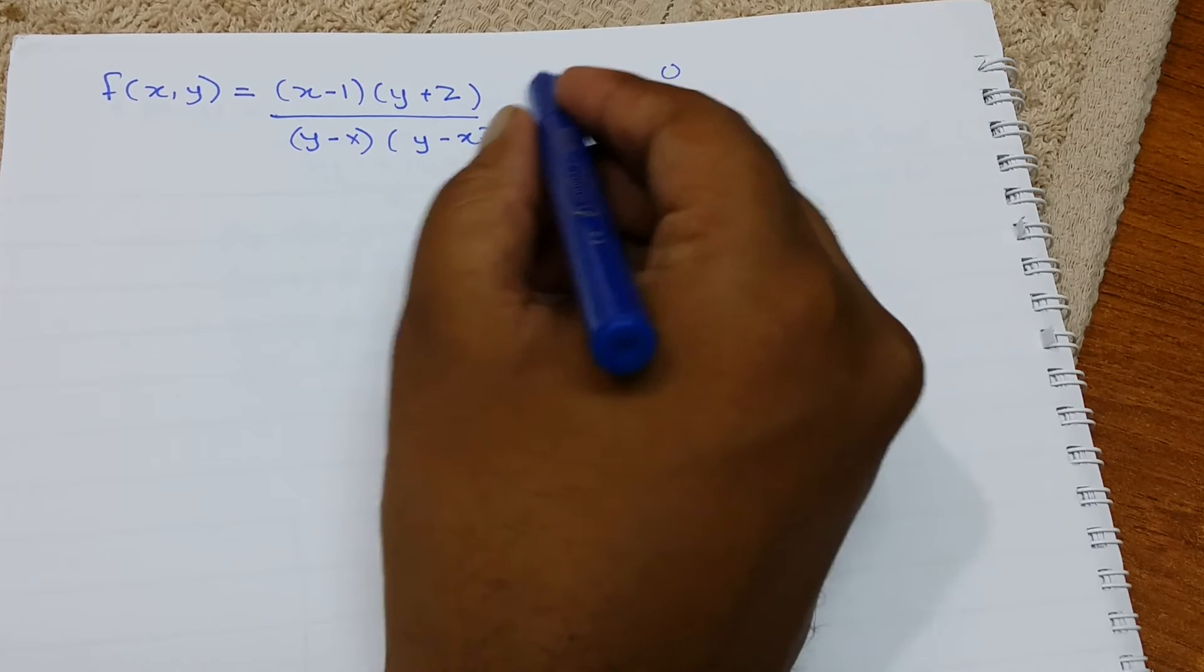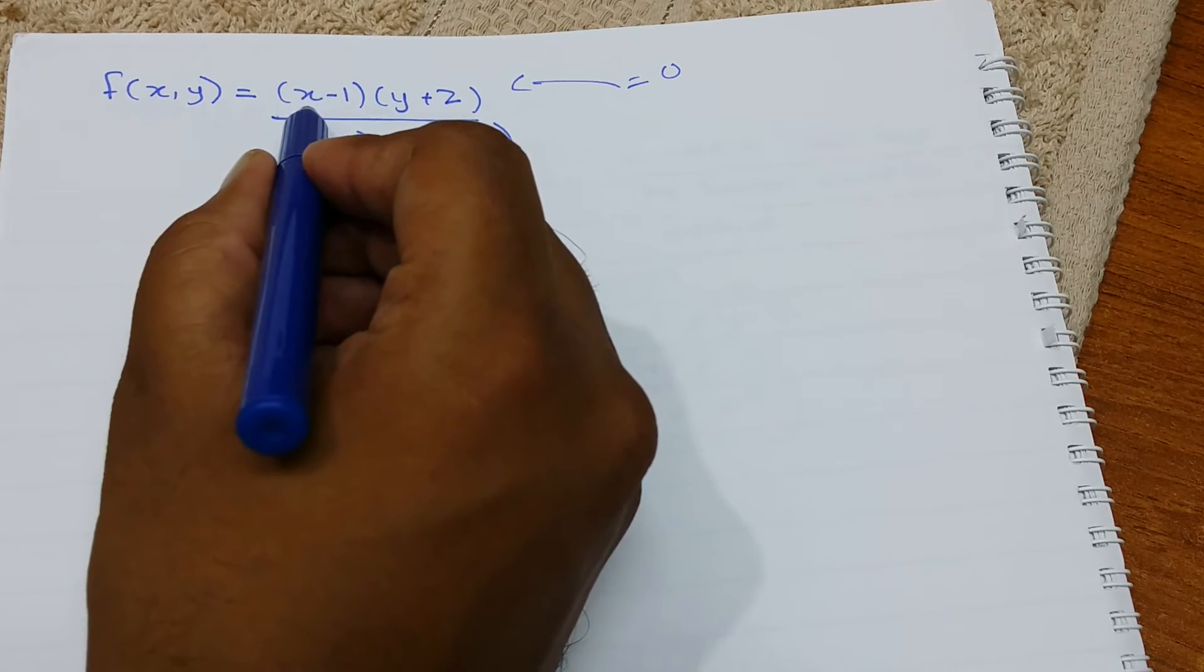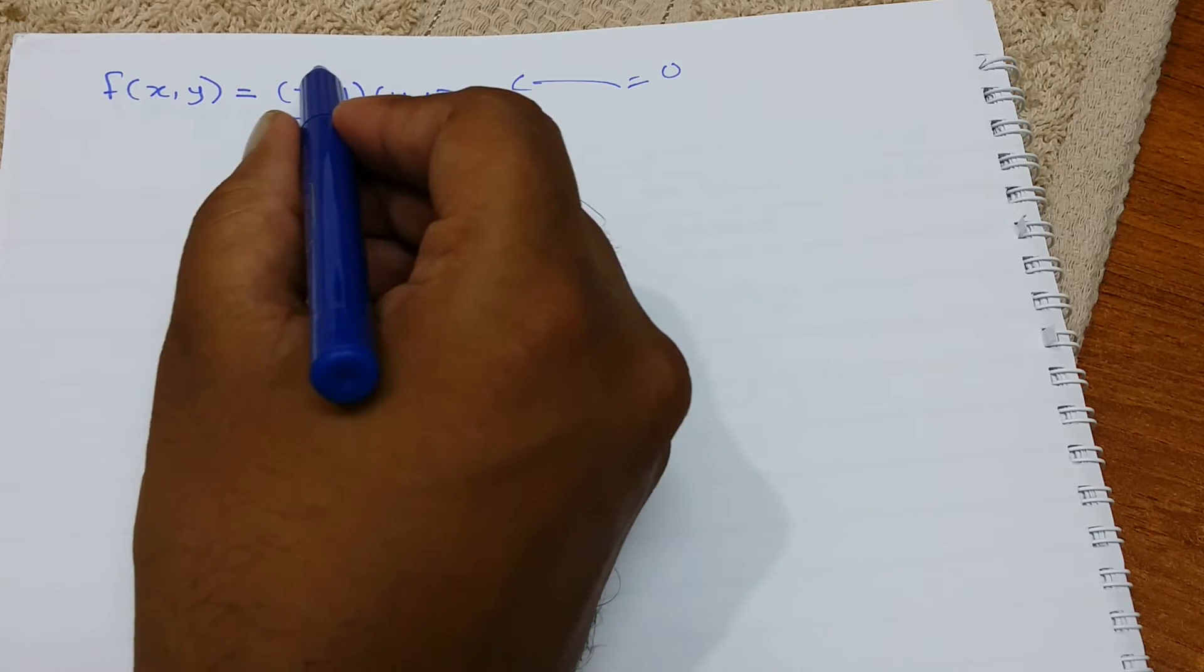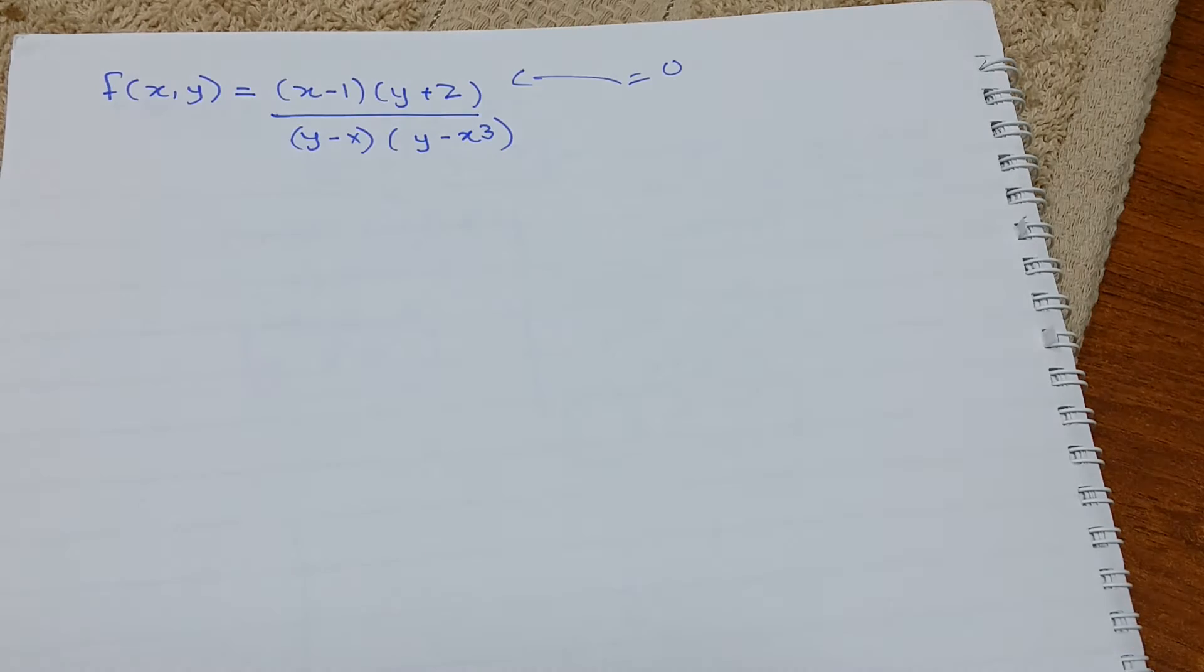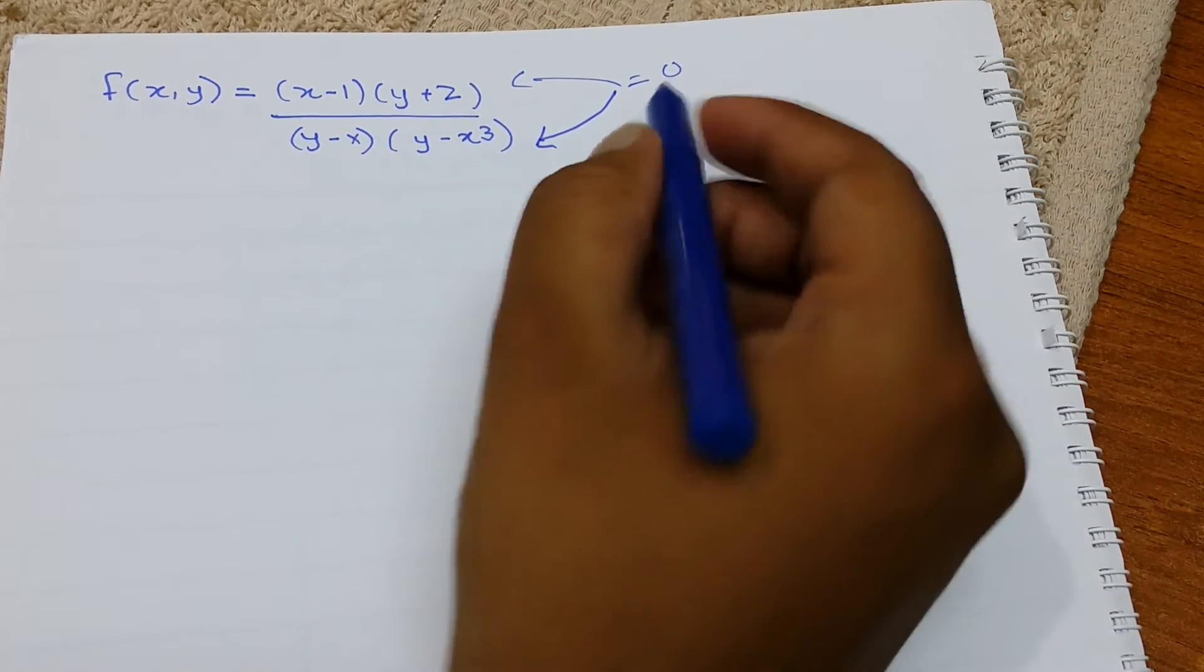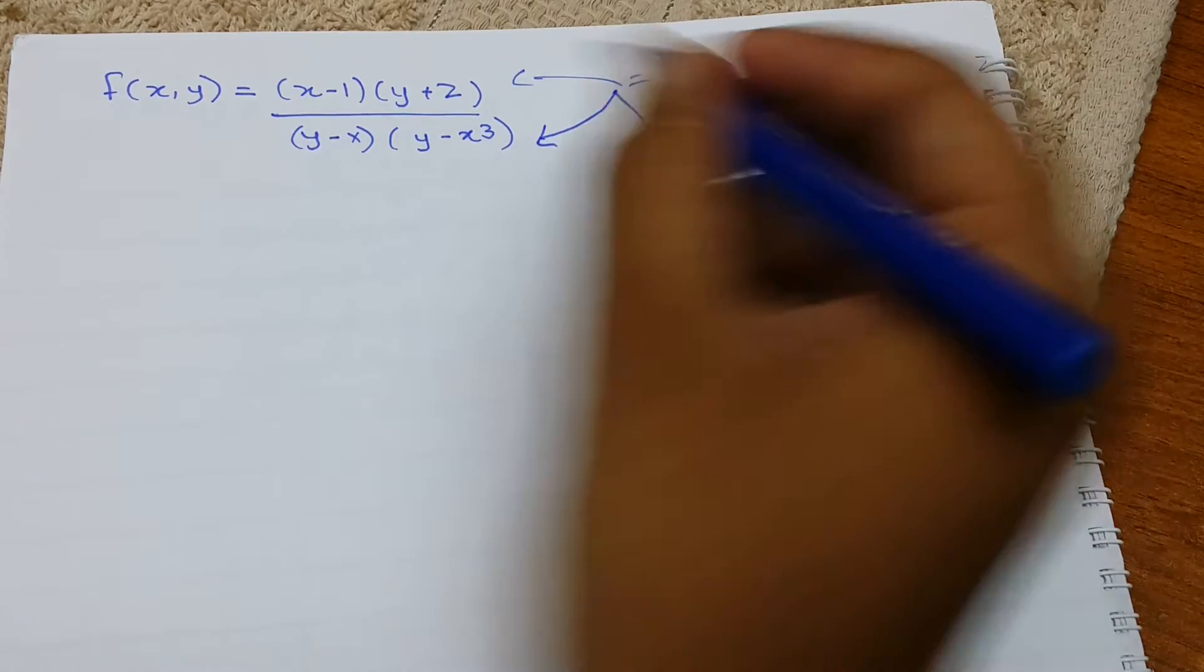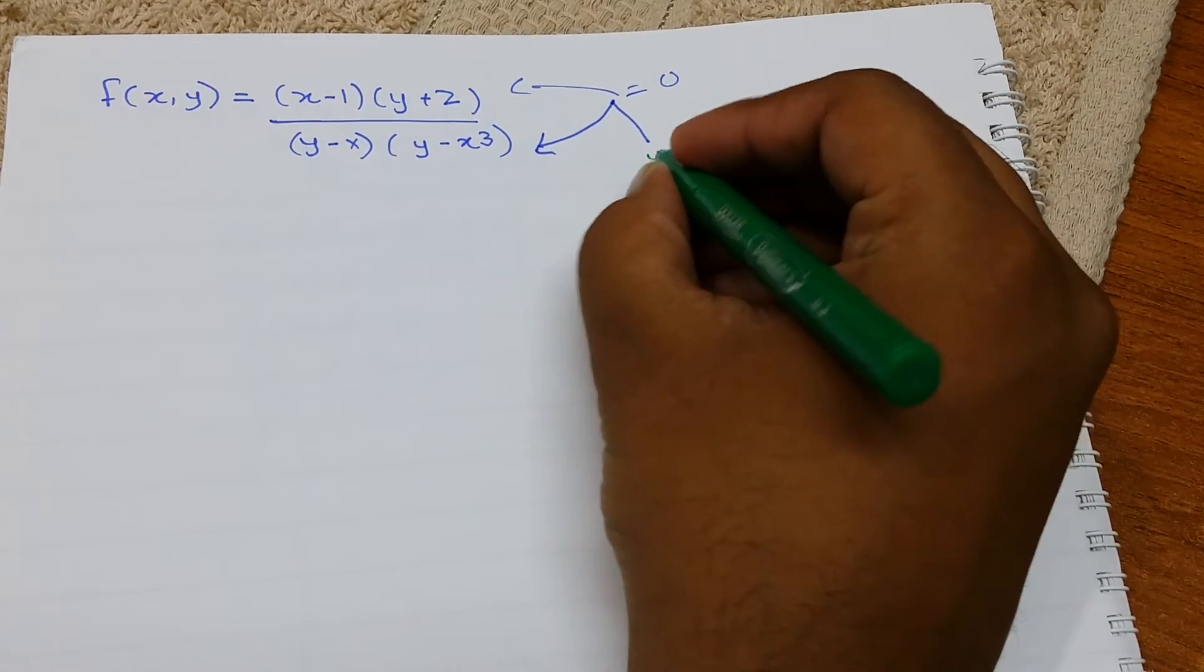Let's say we put 1 over here as x and then this whole term will become 0, and we don't have any such problem. But if we have 0 in our denominator, that is going to be a problem. That is going to give us undefined.